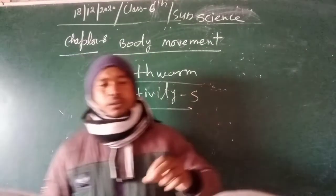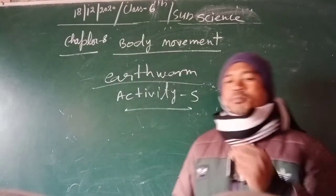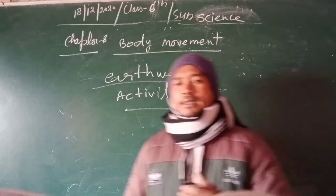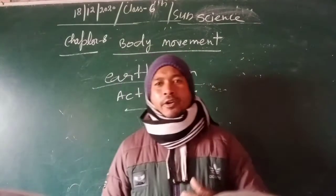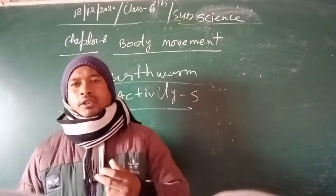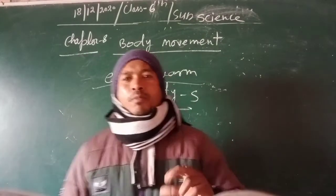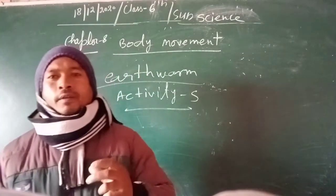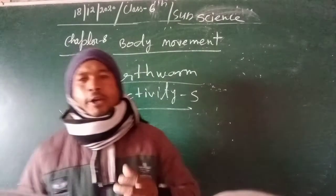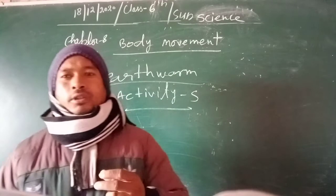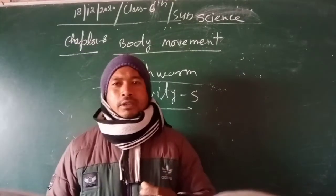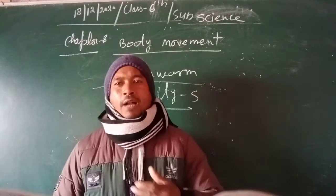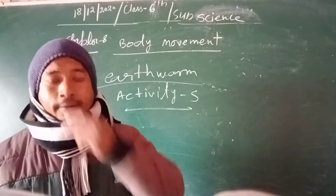It moves forward by a small distance by repeating such muscle contractions and expansions. Continuously, the earthworm can move throughout the soil. Its body secretes a slimy substance to help the movement.